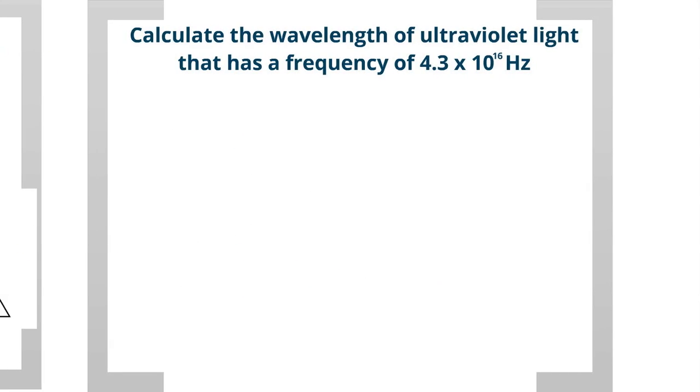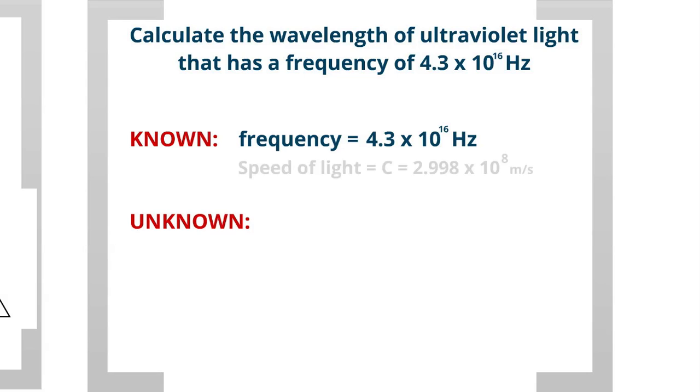Let's calculate the wavelength of ultraviolet light that has a frequency of 4.3 times 10 to the 16th hertz. Let's look at our knowns and our unknowns. Frequency is 4.3 times 10 to the 16th hertz, that's given to us in the problem, and we also always know the speed of light, C. It's always 2.998 times 10 to the 8th meters per second. Our unknown is the wavelength, lambda.